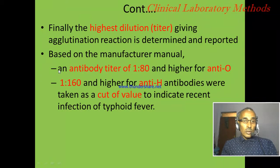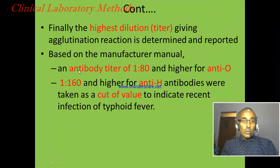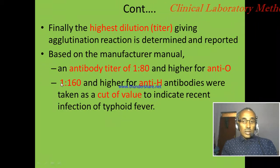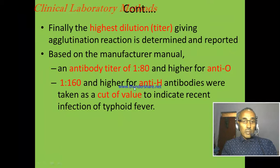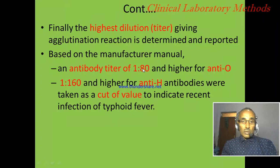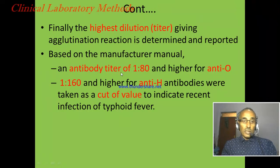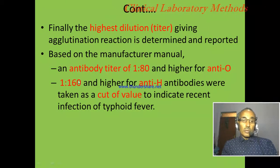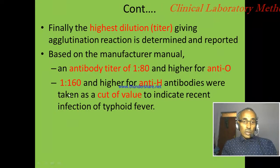To interpret results: for anti-O, a reaction at 1:80 and above is taken as significant agglutination or significant infection. For anti-H, 1:160 and above is taken as significant or acute infection. For anti-O, a titer below 1:160 will not be taken as significant or acute infection.